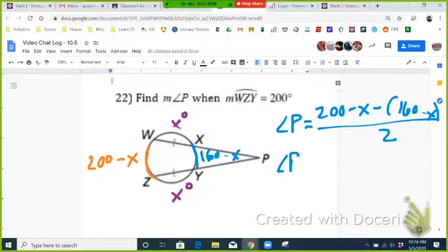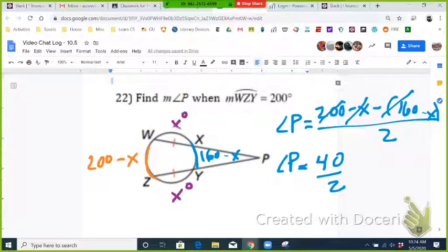So now we got angle P is going to simplify to just 40 over 2, because 200 minus 160 is 40. And then negative X minus negative X is like a plus X. So we get 20 degrees for angle P. And that's it.